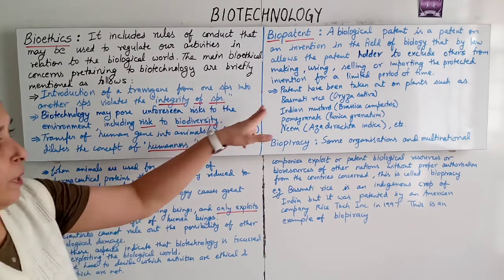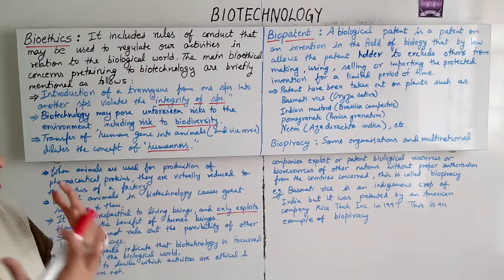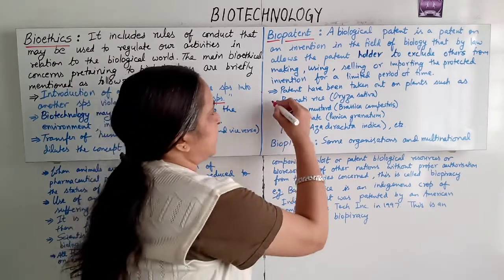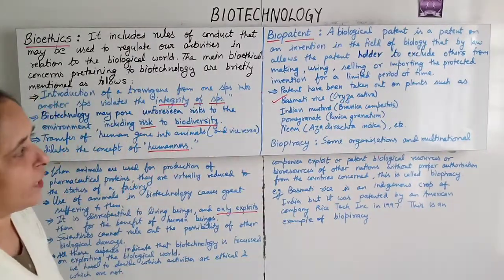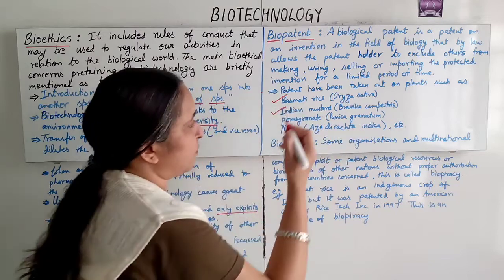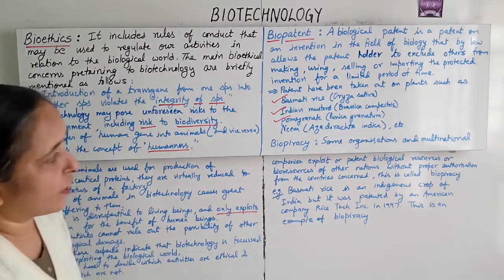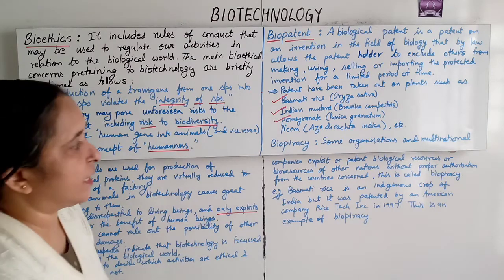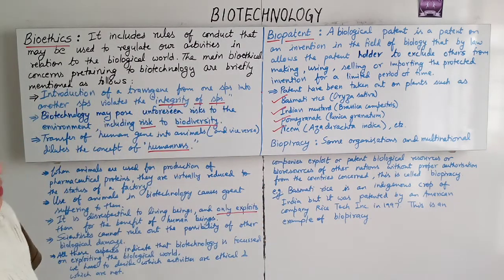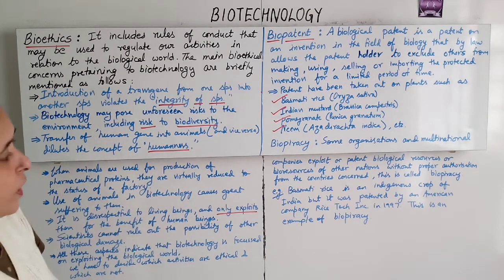Patents have been taken out on plants. A few examples are: basmati rice (Oryza sativa), Indian mustard (Brassica campestris), pomegranate (Punica granatum), and neem (Azadirachta indica). These are examples of plants on which patents have been taken.